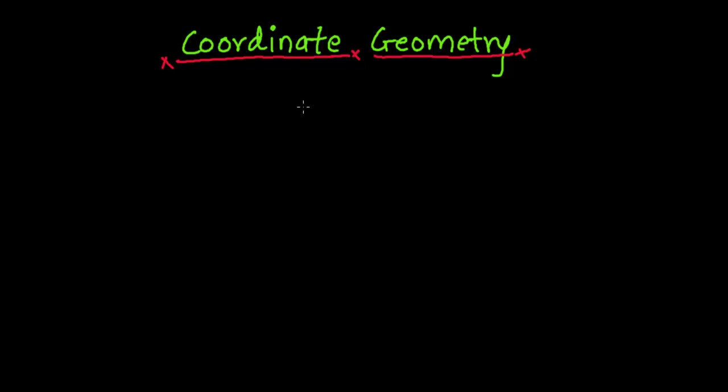Hi friends, today we are going to learn about coordinate geometry. In coordinate geometry, we basically learn to locate the positions of different objects or points in a plane. To locate the position of any object in a plane, we need two perpendicular lines.